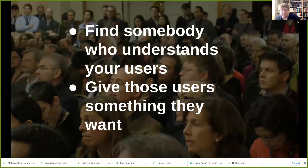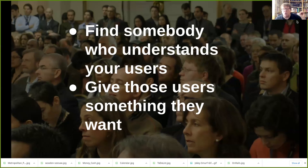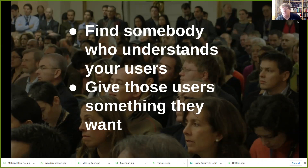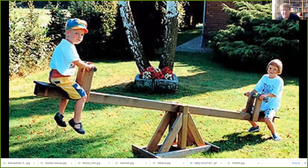So in conclusion: find somebody who understands your users. In the example I've given, the person who understood the users was somebody who had been one of those users. In other projects that may not be the case, so you have to do some user research — do some research to understand the users. Another thing you can do is find users who will act as advocates and champions for your product. Once you've started to understand the users and what they want, you need to do some work to provide software that can give those users what they want. If you can do that, you change the balance of the project.